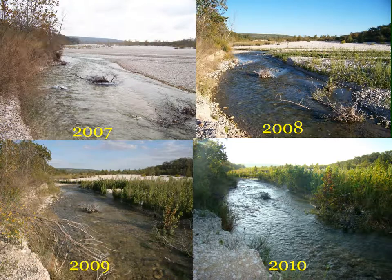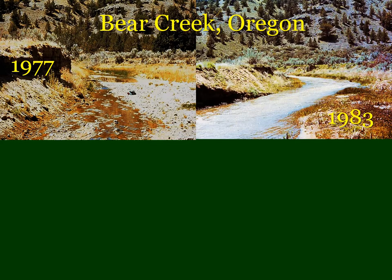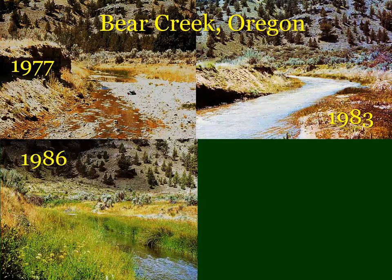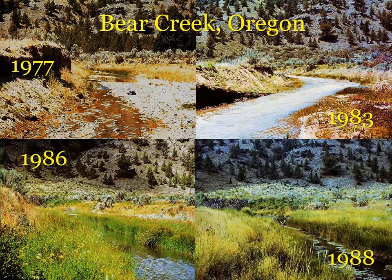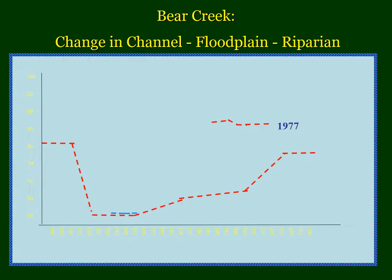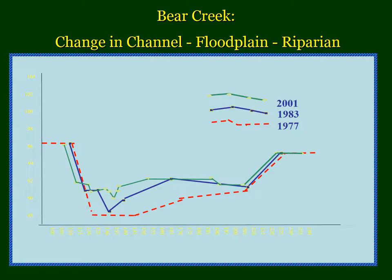You've seen the Bear Creek restoration photos from central Oregon. Photos tell a really good story of change over time, especially if they're combined with notes and narrative. In the case of the Bear Creek story, the photos are combined with data collection — they took a survey of the cross section of that photo point over time and noted the change in channel shape, the change in floodplain over time, how the channel narrowed and how the floodplain increased. The more information you can include in your monitoring, the better.